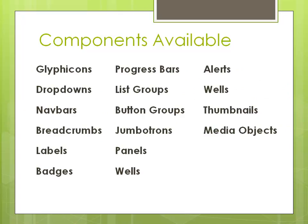There are a bunch of components in Bootstrap, and here are a few of them. We have Glyphicons — basically little icons you can use in headers and similar places. Dropdowns, navbars, breadcrumbs, labels, badges, progress bars, groups of lists and buttons, jumbotrons which is like a showcase area, panels and wells that give a little texture to your content, alerts, and thumbnails and media objects. Don't worry if you don't know what some of these things are, because we're going to go over that in a bit.